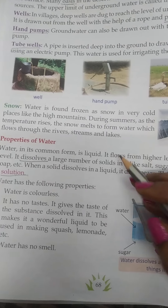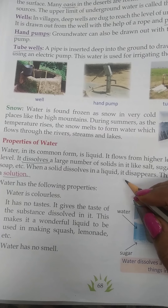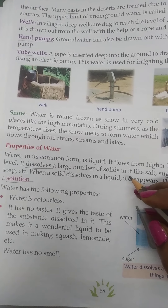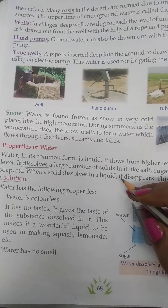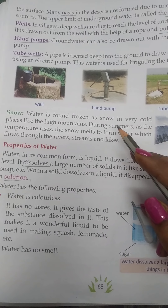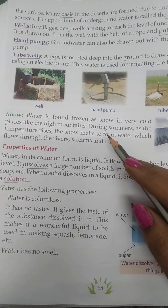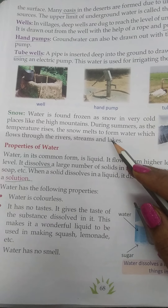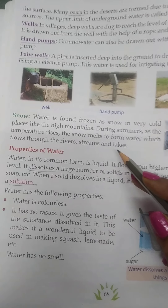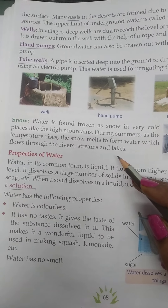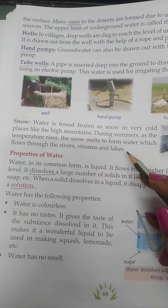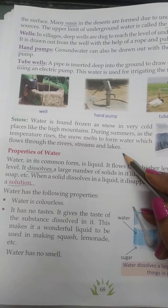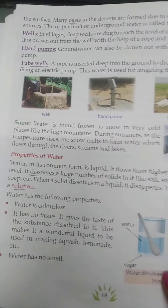Next is snow. Water is found frozen as snow in very cold places like high mountains. In the high mountains, the weather is very cold, so water is frozen and found in the form of snow. But during summer, as the temperature rises, the snow melts to form water and flows through rivers, streams, and lakes. Our next topic is properties of water.